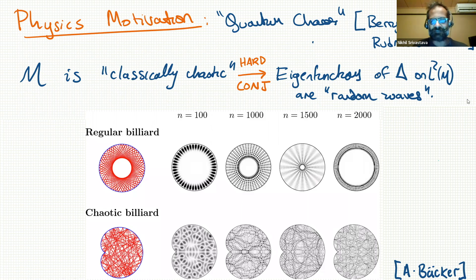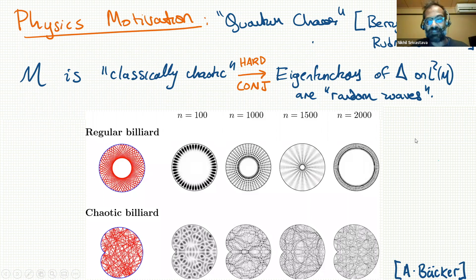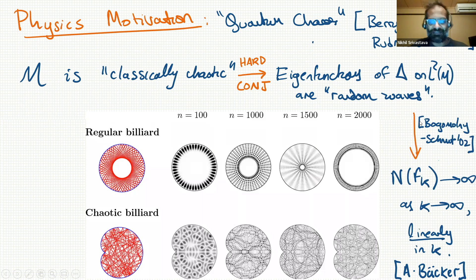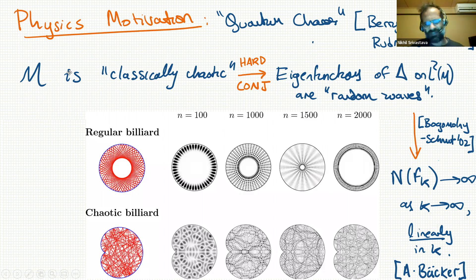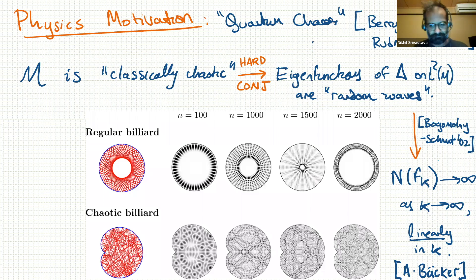Berry's conjecture says this intricate structure should be explained by some random model. One implication of the conjecture, due to Bogomolny and Schmidt, is that the number of nodal domains should go to infinity linearly with the index of the eigenfunction. So there's an underlying mathematical physics motivation: people believe nodal domains go to infinity because they believe this random wave conjecture.